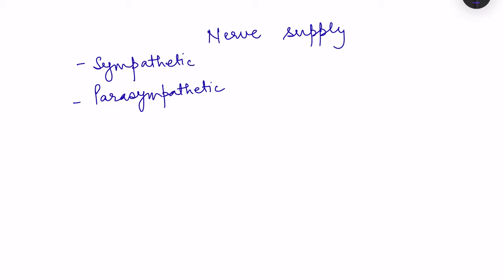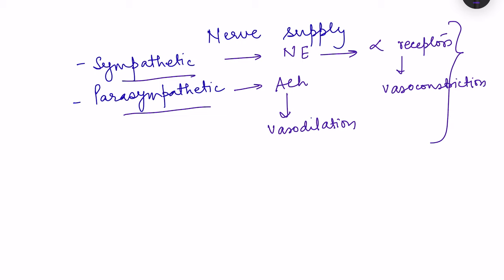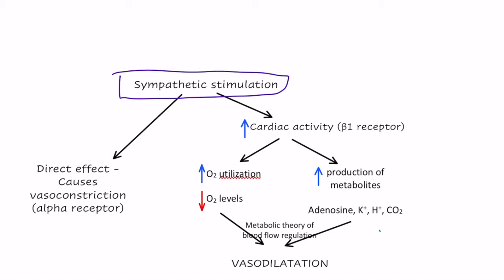Coronary arteries are innervated by both sympathetic and parasympathetic nerves. Sympathetic nerves release epinephrine and norepinephrine, while parasympathetic nerves release acetylcholine. Norepinephrine acts on alpha receptors and causes vasoconstriction, while acetylcholine from parasympathetic stimulation causes vasodilation. However, these are the direct effects, and the actual physiological effect in the heart is different — sympathetic stimulation actually results in vasodilation.